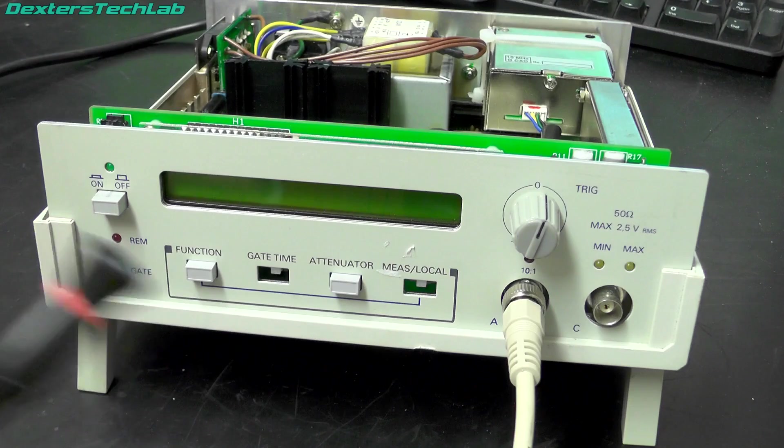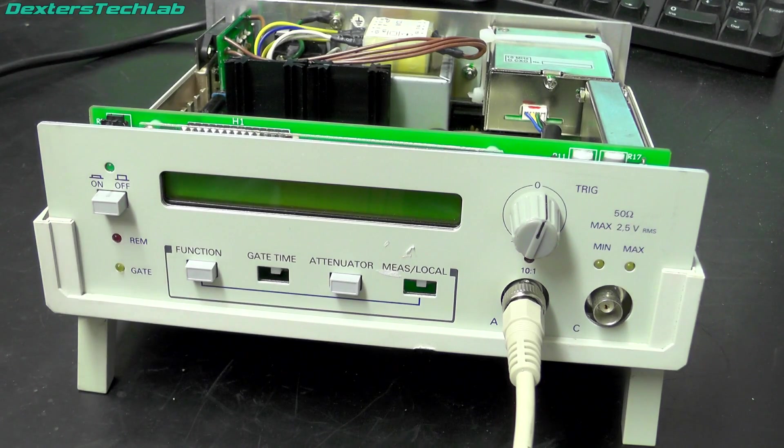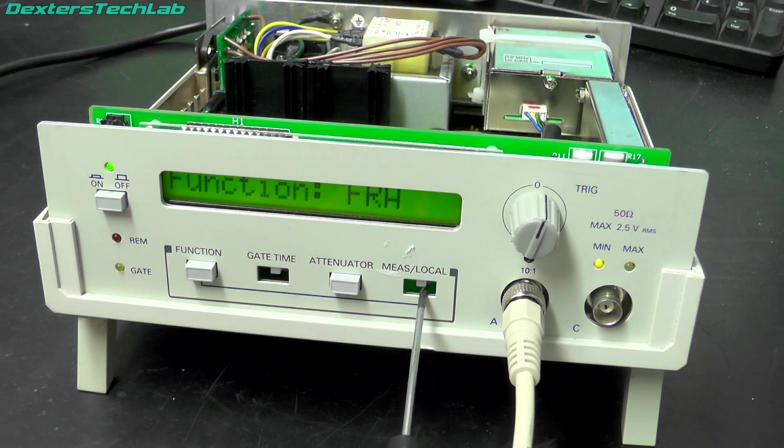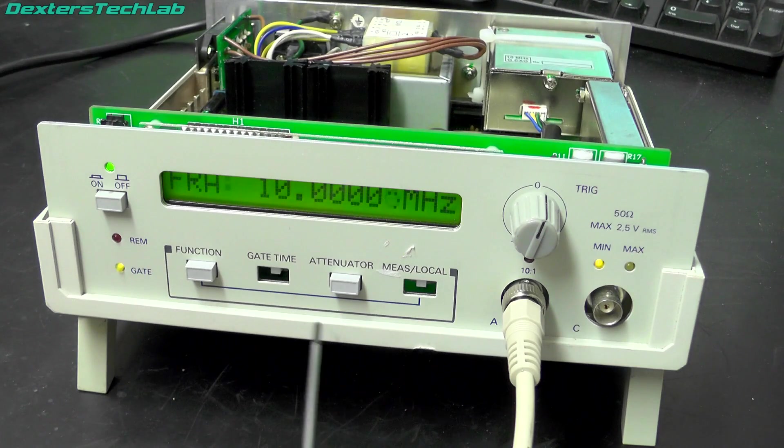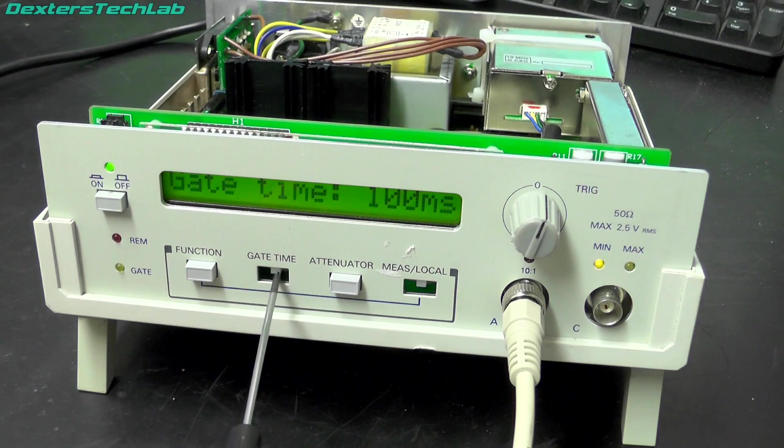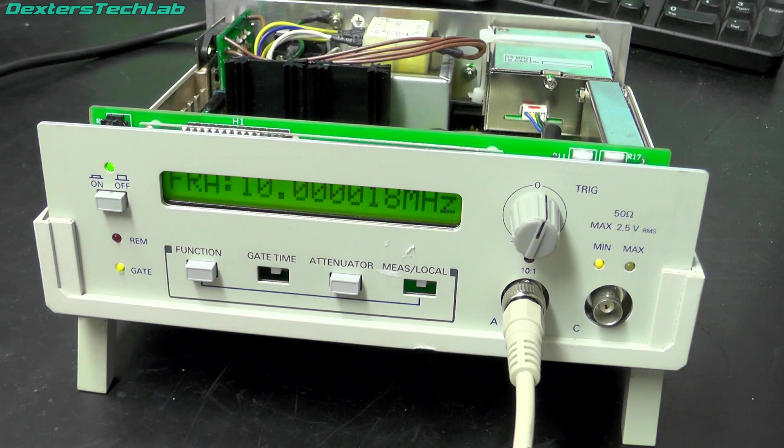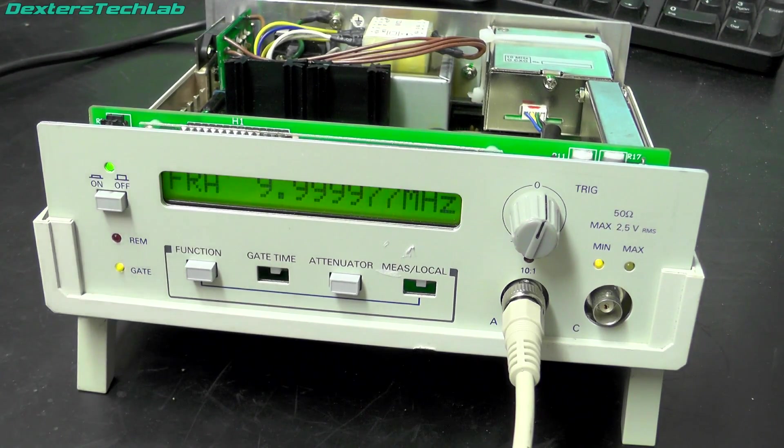Now over the last day or two I've been playing around with the calibration on this and I think I've got it dialed in as best I can. So if I just change this to frequency on A and turn the gate time up to one second. We've got 10MHz there and I've just turned it on so it's going to fluctuate around a little bit but it should settle down pretty much bang on 10MHz.